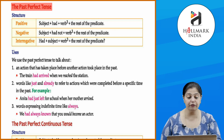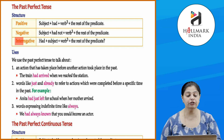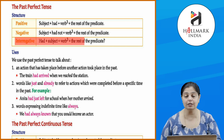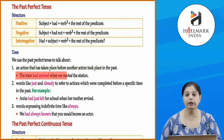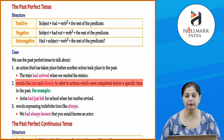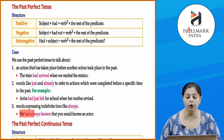Now the past perfect tense. Structure: subject plus had plus verb 3 plus rest of the predicate. Negative: subject plus had not plus verb 3 plus rest of the predicate. Interrogative: had plus subject plus verb 3 plus rest of the predicate. Uses: an action that took place before another action in the past — 'The train had arrived when we reached the station.' Words like just and already — 'Anita had just left for school when her mother arrived.' Indefinite time with always — 'We had always known that you would become an actor.'